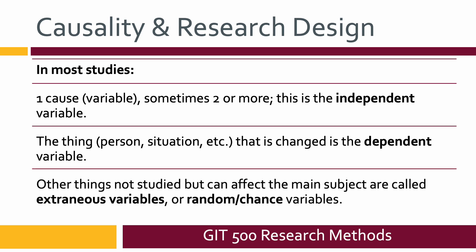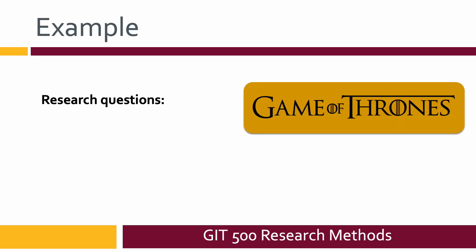We also have other things that are not studied but can affect the main subject, and these are called extraneous variables or random chance variables. So here's an example. If these were our research questions about the Game of Thrones, which I know is older now but I assume everybody's at least heard of it, you might want to find out who in your class, maybe GIT 500, maybe another one, is a fan of Game of Thrones. Why are they fans of the show? So those are our two research questions.